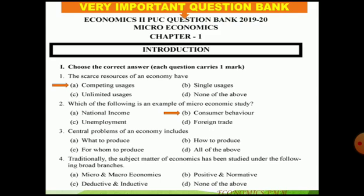Third question: central problems of an economy — which includes option A: what to produce, option B: how to produce, option C: for whom to produce, or option D: all of them. The correct answer is all of the above. All three problems are the central problems of any economy.